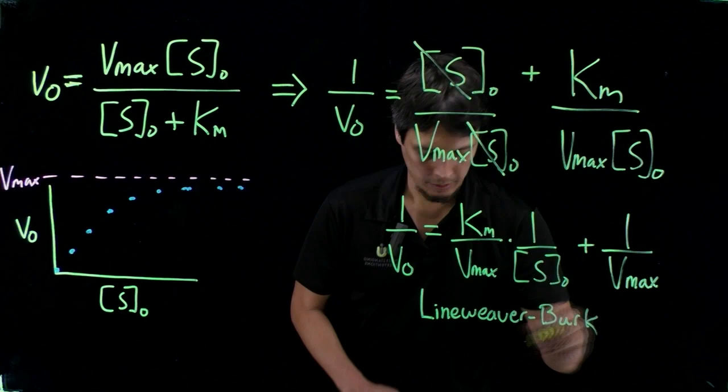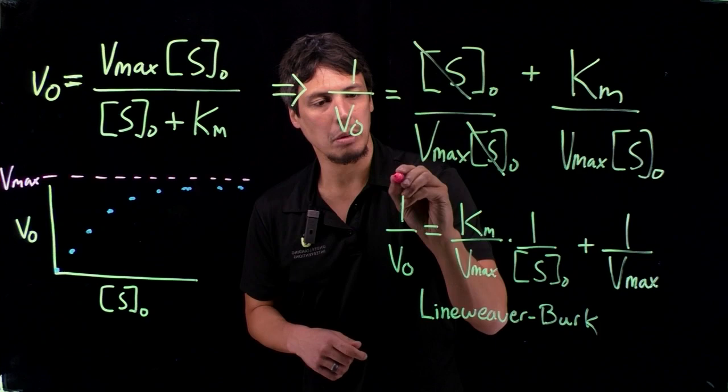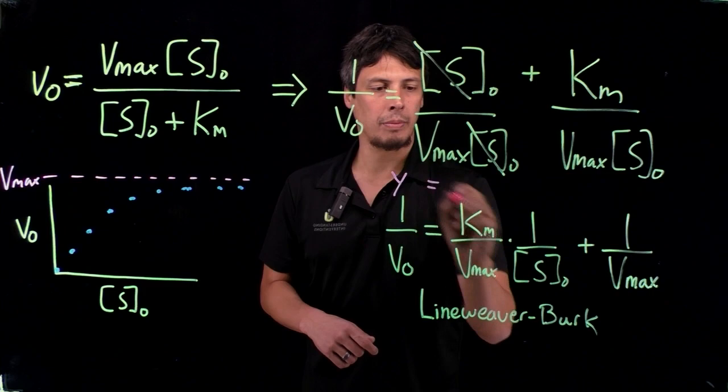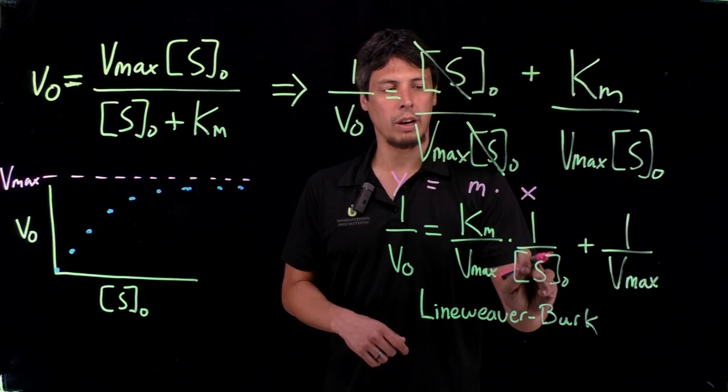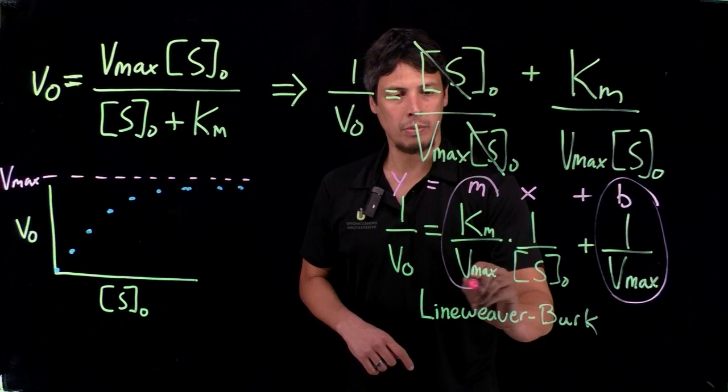This follows, once again, the linearization Y equals Mx plus B, because we set Y equal to 1 over V-naught. We have M times X, so X is 1 over S-naught. B, or the intercept, is 1 over Vmax, and the slope is Km over Vmax.